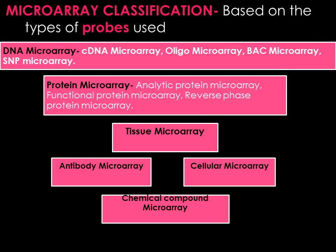Based on the types of probes used in microarray, there are different types. DNA microarray either measures DNA or uses DNA as part of the detection system. There are subtypes of DNA microarray: cDNA microarray, where mRNA samples are reverse transcribed to cDNA and these cDNAs are immobilized on a glass slide; oligonucleotide microarray, where short DNA oligonucleotides are spotted on the array; and SNP microarray, where single base differences between two sequences — known as single nucleotide polymorphisms — are detected.